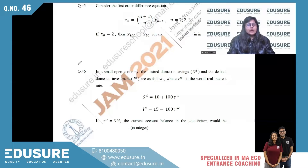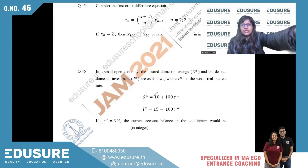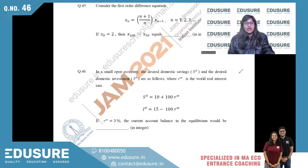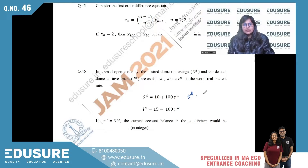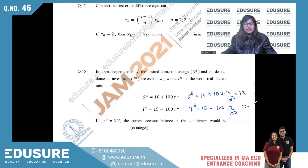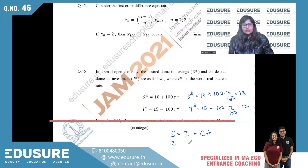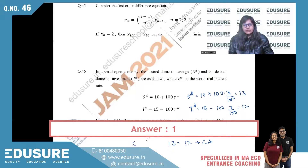IIT JAM 2021 question number 46. In a smaller open economy, the desired savings and desired domestic investment functions are given, and the world rate of interest is three percent. Substituting: Sd = 10 + 100×(3/100) = 13, and Id = 15 − 100×(3/100) = 12. Using the equation S = I + CA, the current account balance = 13 − 12 = 1.